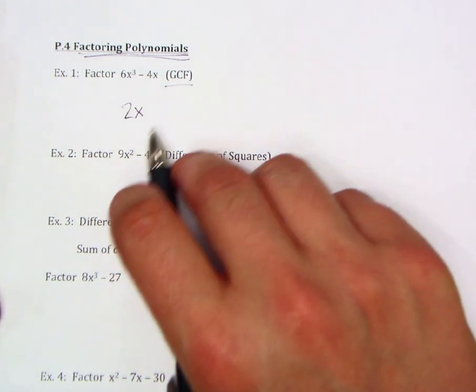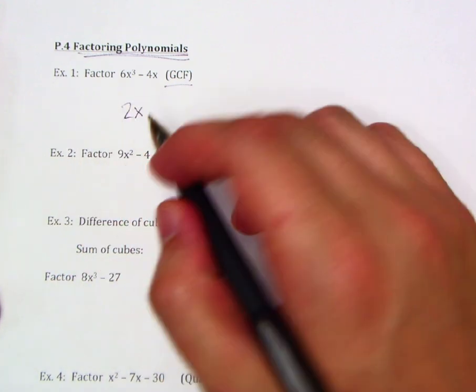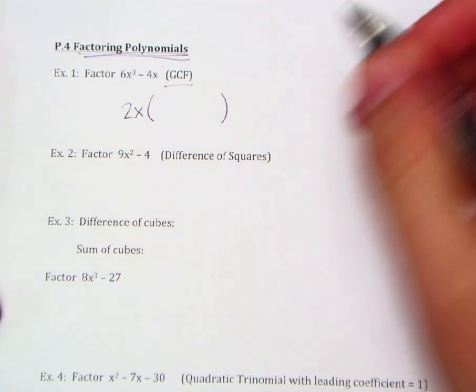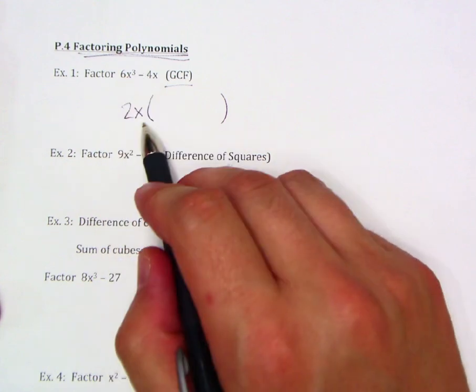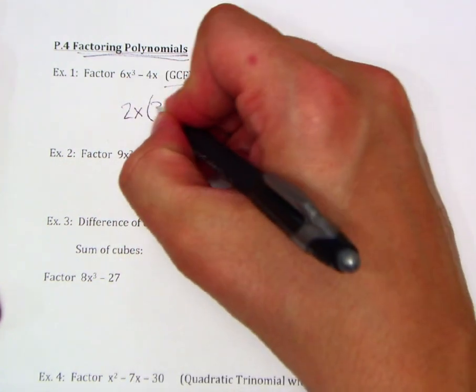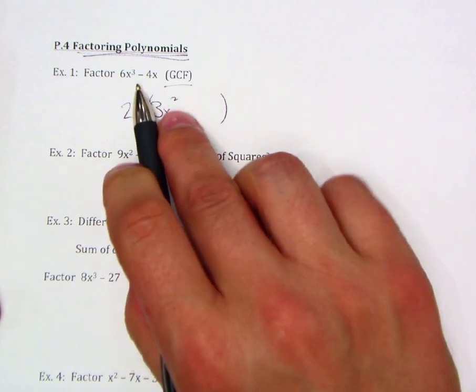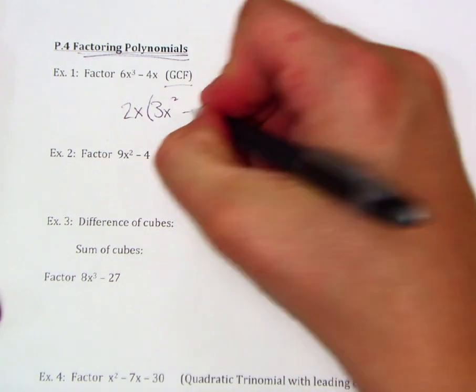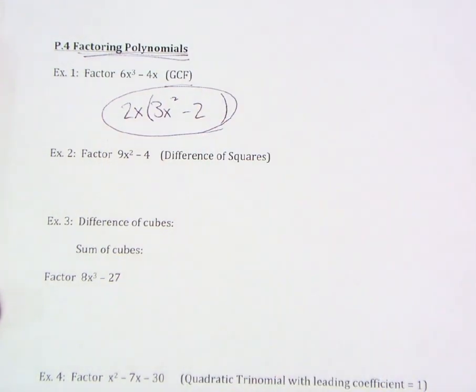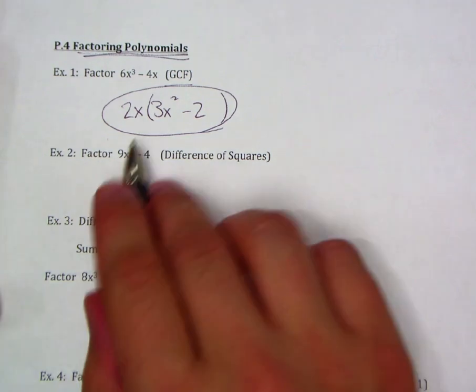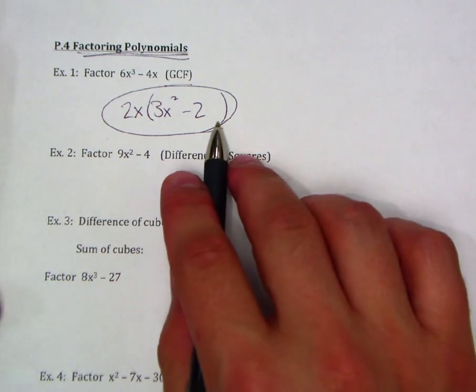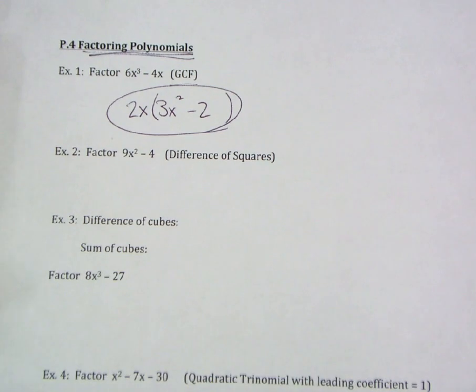We're not just saying find the GCF, we're actually saying factor it out of each term. So 6x³ divided by 2x would leave us with 3x². Just like -4x divided by 2x is going to leave us with -2. So there we have it factored. We factored out our GCF, and we know that if we were to distribute that, we would get the original quantity back.